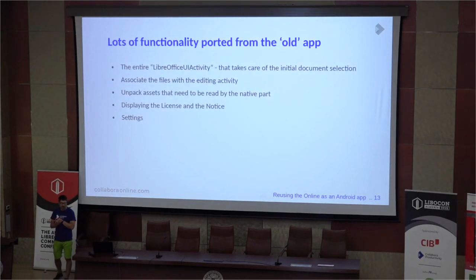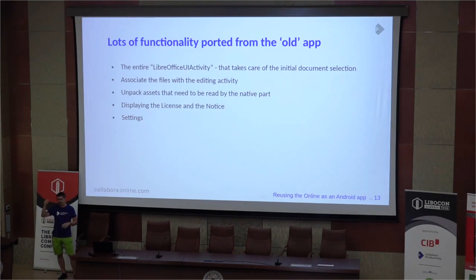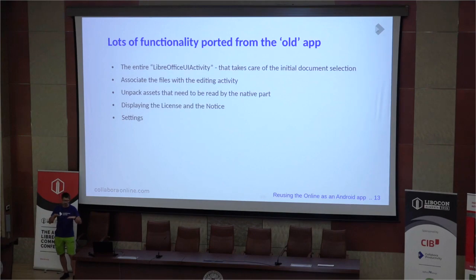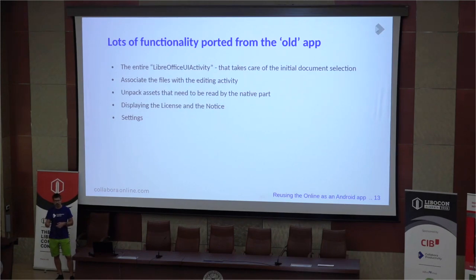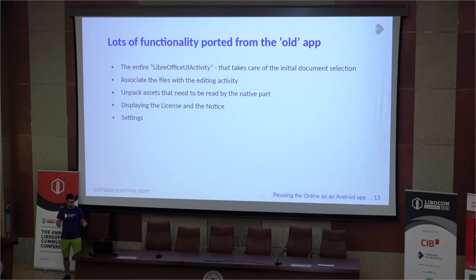Lots of functionality had to be ported from the old app. What I described so far was just the editing part, but the old app in core.git had much more — like the initial shell where you have recent documents, and that had to be ported. It was necessary to associate files the same way the old application did, so that when you install the app and tap on a file in your email client, this Android app based on online can actually handle those files.